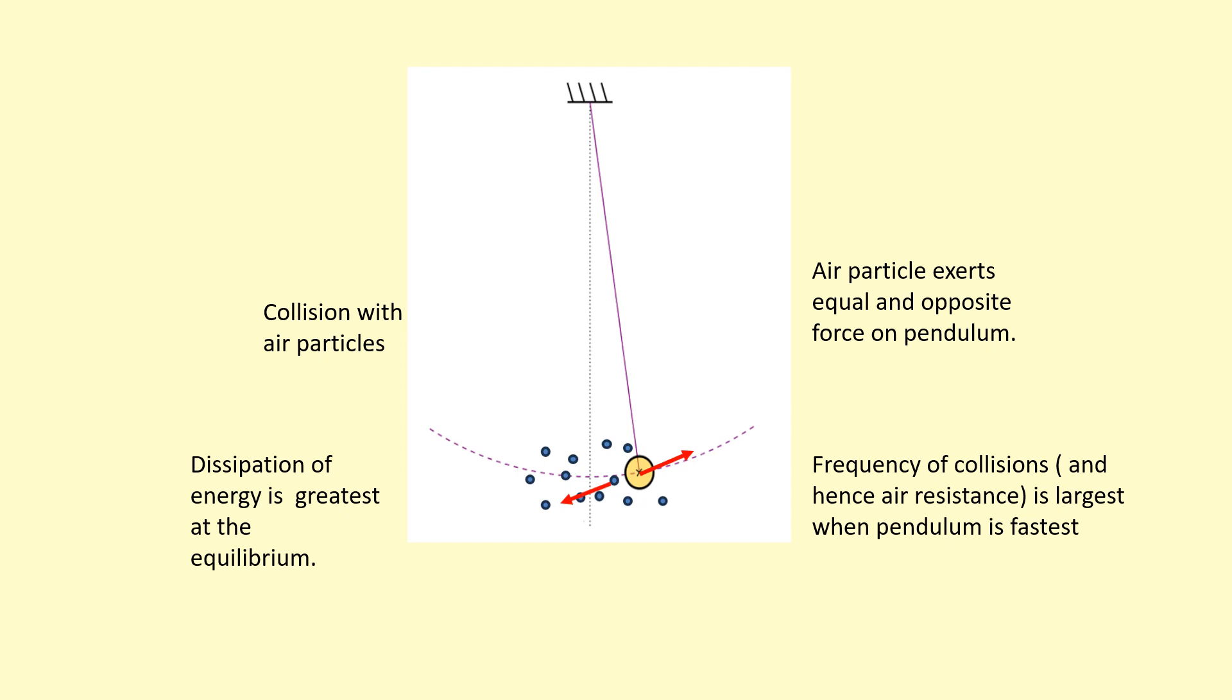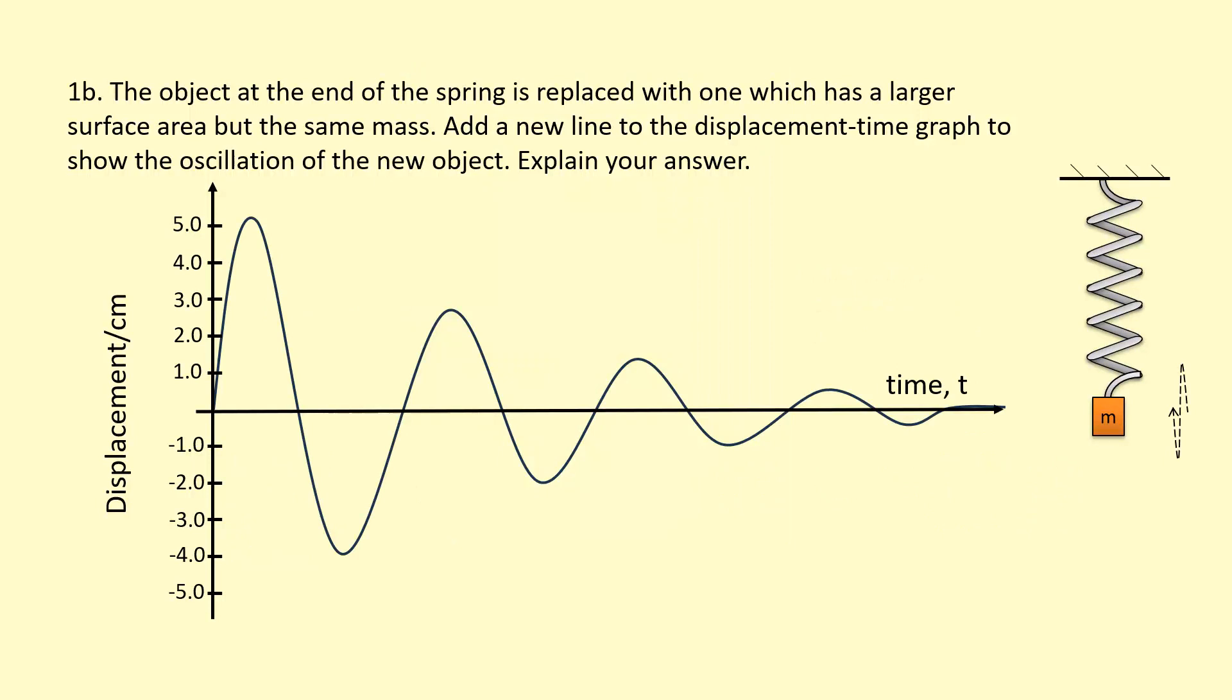Part b of the same question: this mass is replaced with one with a larger surface area but the same mass. Add a new line to the displacement-time graph to show the oscillations of the new object and explain your answer. If it's got a larger surface area, it's going to collide more frequently with air particles, so air resistance is going to be larger at the same speed. The time period isn't going to change because it's still the same mass and still the same spring constant, so it's still going to oscillate over the same time period.